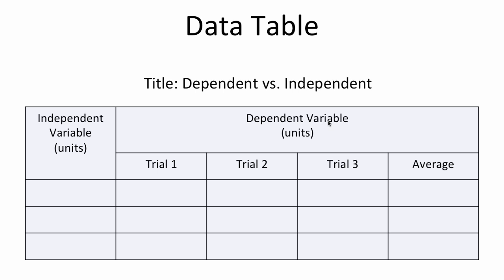You'll notice we have trial one, trial two, trial three, and average. That's where we start talking about the importance of doing multiple trials. You want to test each independent variable multiple times in order to get an average, and in order to avoid what are called outliers — things that might not be correct. So you need to test each one of those independent variables several times to find the average.